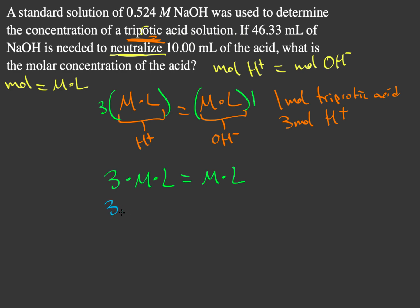And now this is appropriately representative of how my triprotic acid behaves in this solution. So if I start plugging in my numbers, I have three times the molarity, which I do not know what it is, times the volume, which is 0.01 liters, which is the same thing as 10 milliliters, is equal to my molarity, which is 0.524 times my volume, which is 0.04633 liters.